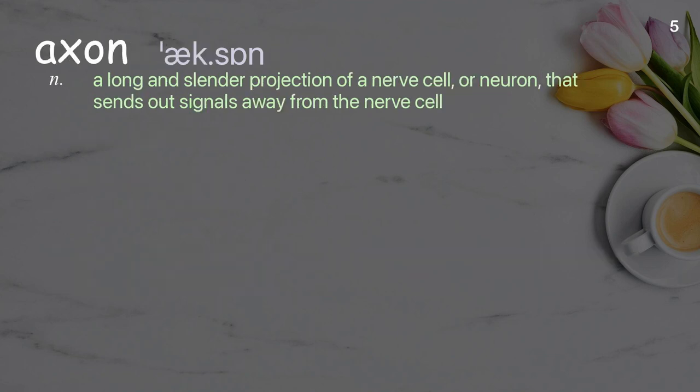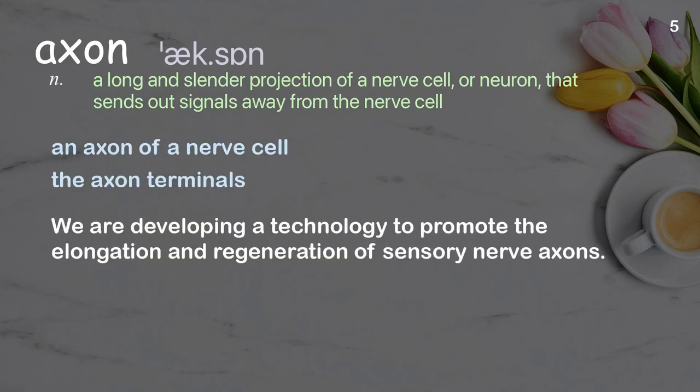Axon: a long and slender projection of a nerve cell or neuron that sends out signals away from the nerve cell. Examples: an axon of a nerve cell, the axon terminals. We are developing a technology to promote the elongation and regeneration of sensory nerve axons.